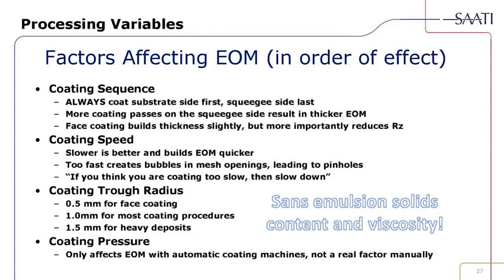Factors that affect EOM in order of effect: coating sequence — always coat the substrate side first, squeegee side last. More coating passes on the squeegee side result in a thicker EOM. Face coating builds thickness slightly but more importantly reduces the RZ. Coating speed — slower is better and builds EOM quicker; coating too fast creates bubbles in the mesh leading to pinholes. As the saying goes, if you think you're coating too slow, slow down. Coating trough radii: 0.5mm for face coating used mainly by graphics and electronics, 1mm for most coating procedures, and 1.5mm for coating coarse mesh to achieve heavier deposits.